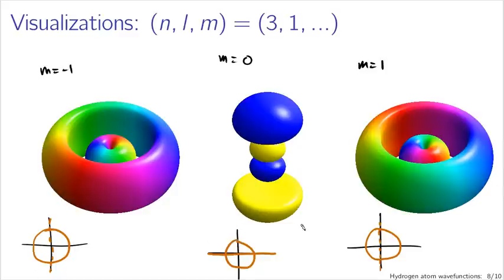The picture for m equals zero is that the particle is unlikely to be found on the xy-plane and at a particular radius. What I'm drawing down here is the structure of the nodes — the regions where the particle is unlikely to be found — since those are the boundaries between the blobs in pictures like this.